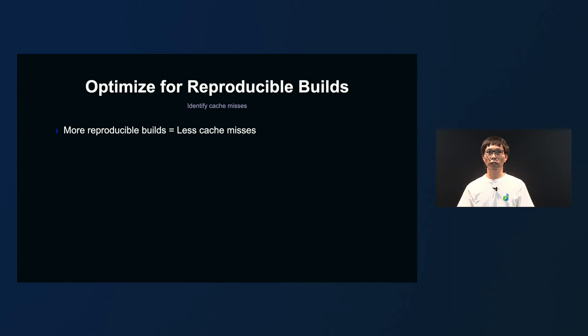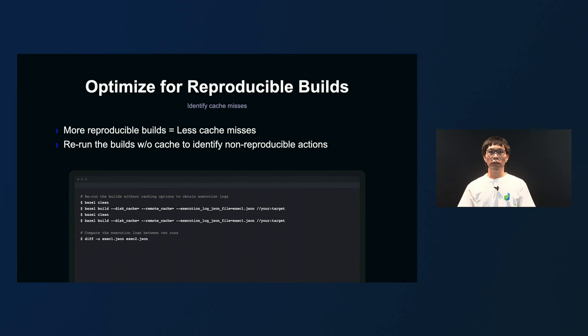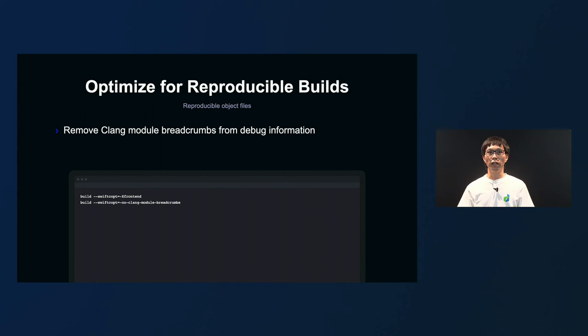To get the most out of remote cache, try to minimize cache misses. If you are to investigate the reproducibility of a build, run a build without cache options twice, or run two different builds on two different machines to get the Bazel execution logs. By comparing the logs, you can identify non-reproducible build actions. If debug info is built into a Swift object, the Clang precompiled module (PCM) — which is an absolute path of the PCM file — will be written.